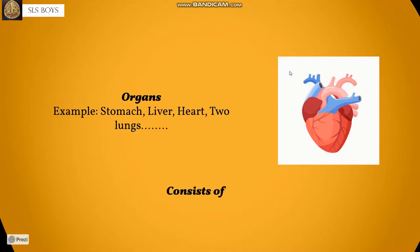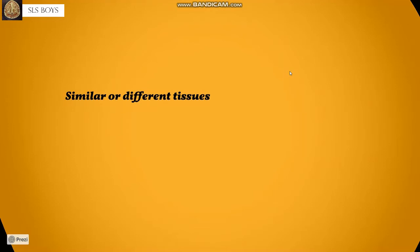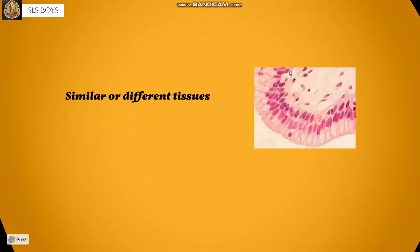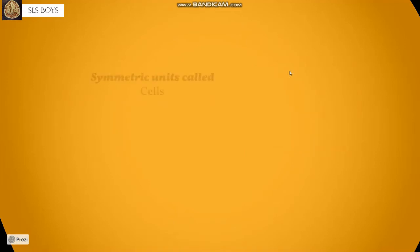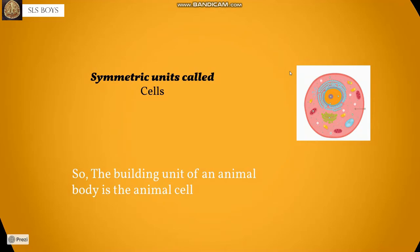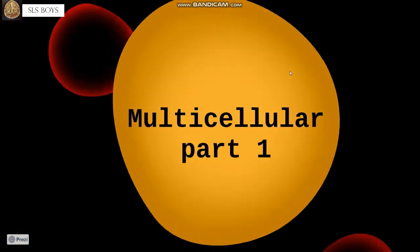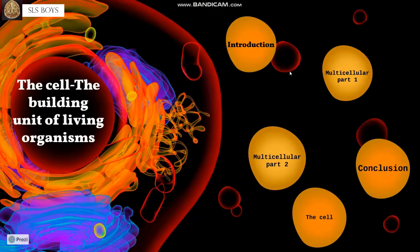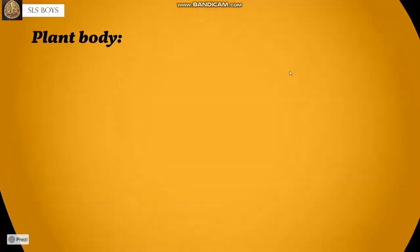Organs consist of similar or different tissues, as shown in the picture. The tissue consists of symmetric units called cells. The building unit of an animal body is the animal cell.